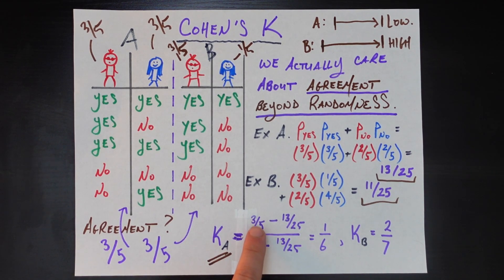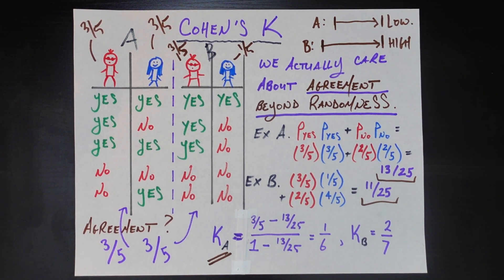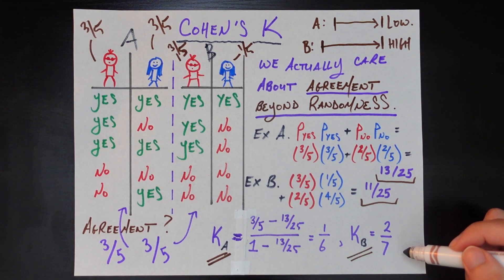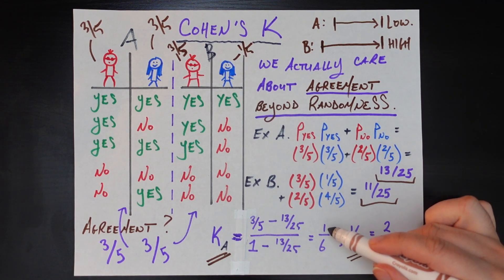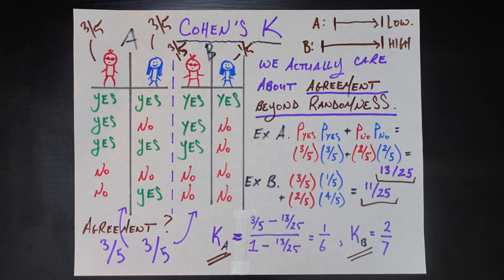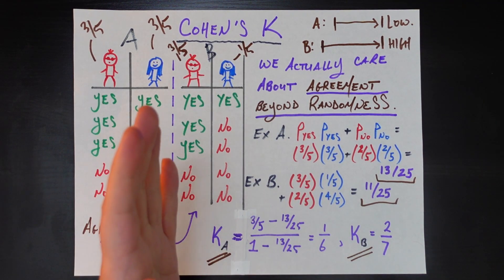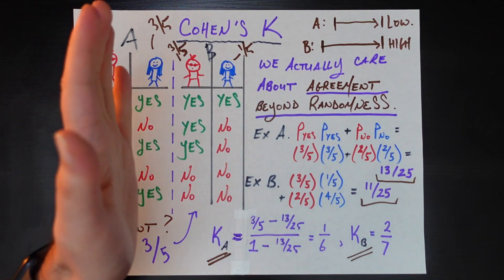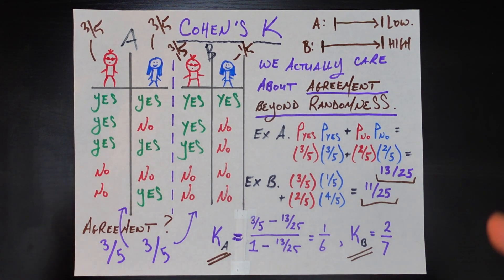Cohen's Kappa is the observed agreement minus the baseline agreement by random chance alone, divided by 1 minus the baseline agreement by random chance alone. For case B, working through the same steps, Cohen's Kappa comes out to 2/7. Since 2/7 is higher than 1/6, that confirms both our mathematical reasoning and our intuition: the agreement between Mr. Red and Mrs. Blue in case B is higher than in case A.